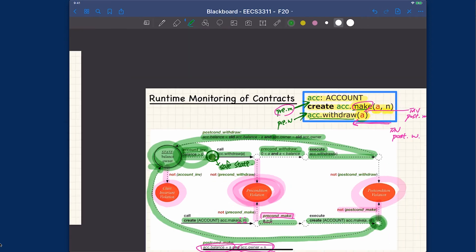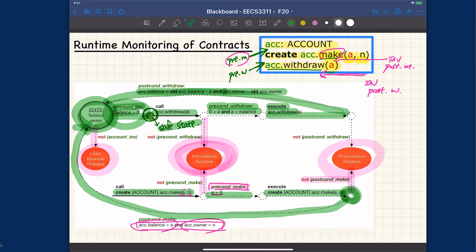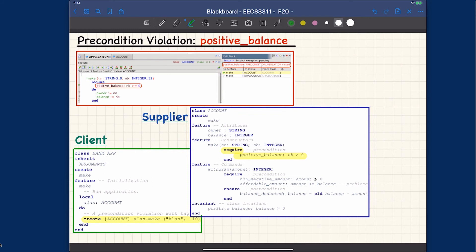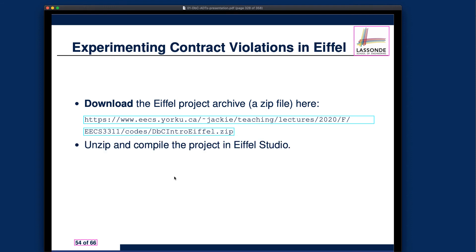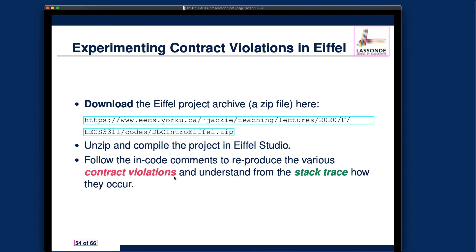These checks happen automatically at runtime. As long as you have this mental model when designing your contracts, you can anticipate what happens at runtime. Now I'd like to point out the screenshots on the slides, which show how you can reproduce different kinds of contract violations — since you might run into violations and want to know how to read them. You can download the Eiffel source code by following the link, unzip and compile the project in EiffelStudio, and follow the inline comments to reproduce contract violations.